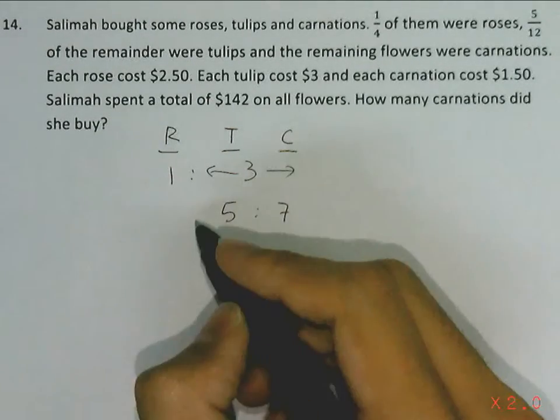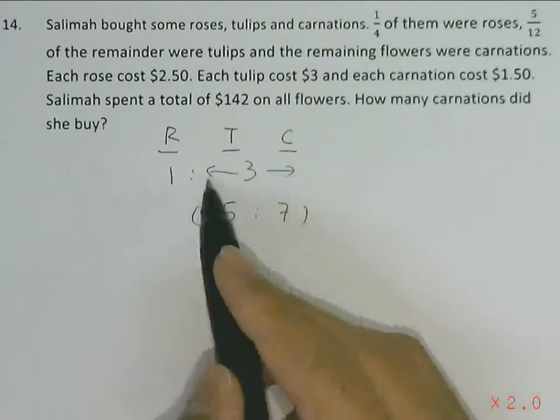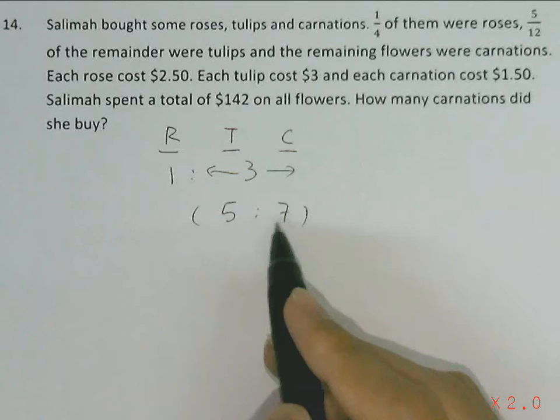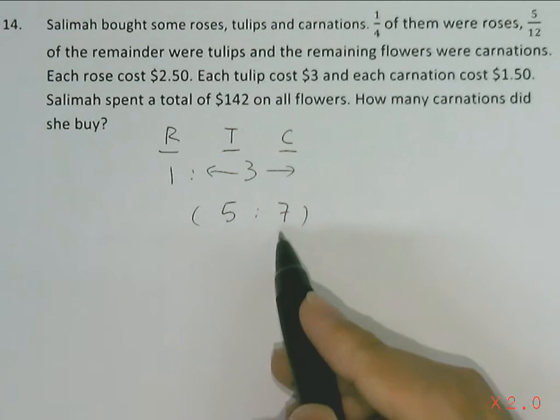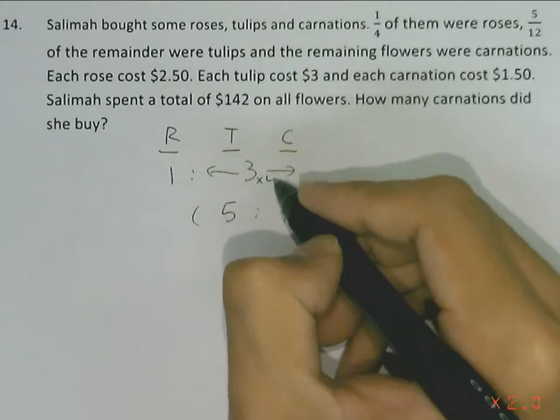Since we know that the number of tulips and carnations should be the same, here we have 5 units plus 7 units, which is 12 units, but here is only 3. So we have to multiply the upper ratio by 4.